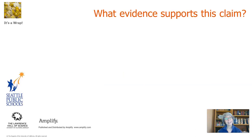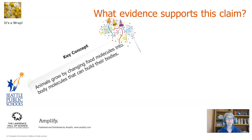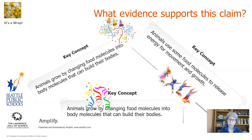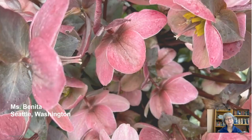We learned these key concepts as part of our evidence: animals grow by changing food molecules into body molecules that can build their bodies; and animals use some food molecules to release energy for movement and growth. And the answer to our question, how do animals grow? Animals grow by changing food molecules into body molecules that can build their bodies. Thank you so much for joining us. We've been spending some time with matter and energy, and now we're going to take all those learnings and look at how food is used in an ecosystem in our next video. Bye for now.